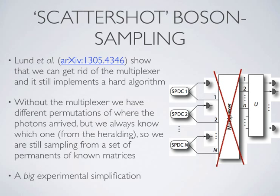There was recent work by Austin Lund and collaborators introducing what's called scattershot boson sampling, where they showed you can get rid of the multiplexer entirely. You just have the SPDC sources, detect one arm of each source, and route the other arms straight into the unitary. They showed that without the multiplexer it still implements a computationally hard problem, because the input state is always some permutation of where the photons could have arrived — known from which heralding arms clicked — and we're still randomly sampling over a set of matrix permanents with known matrices. This is a big experimental simplification.